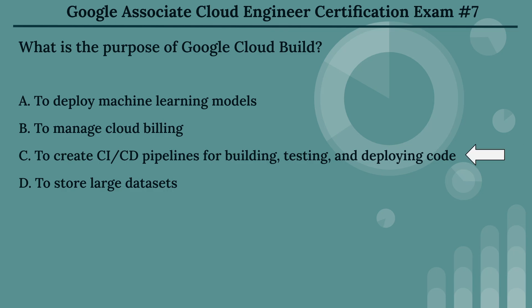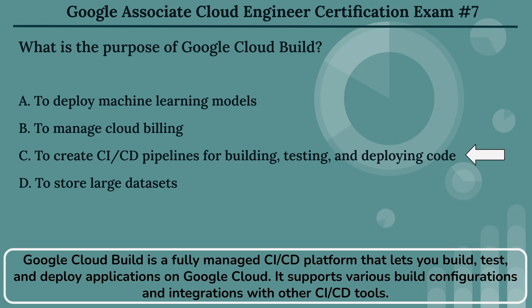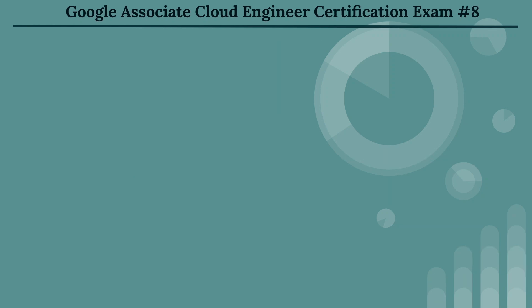The right answer is Option C: to create CI/CD pipelines for building, testing, and deploying code. Google Cloud Build is a fully managed CI/CD platform that lets you build, test, and deploy applications on Google Cloud. It supports various build configurations and integrations with other CI/CD tools.